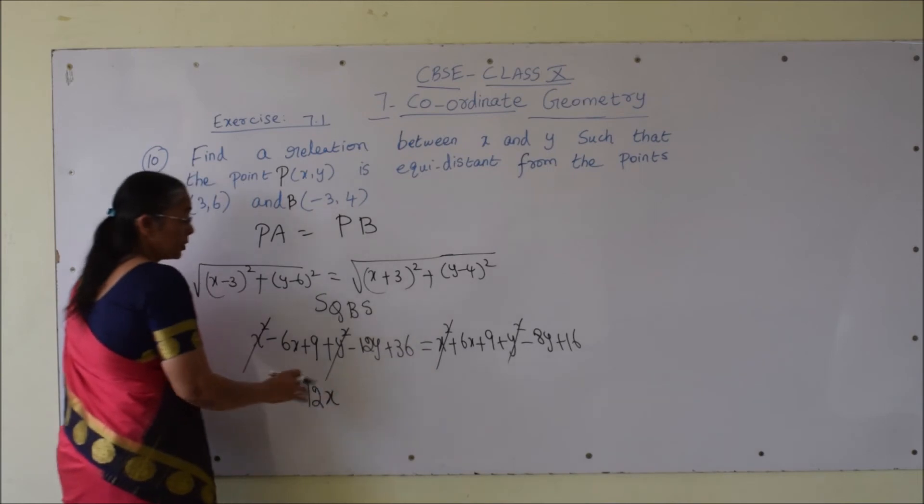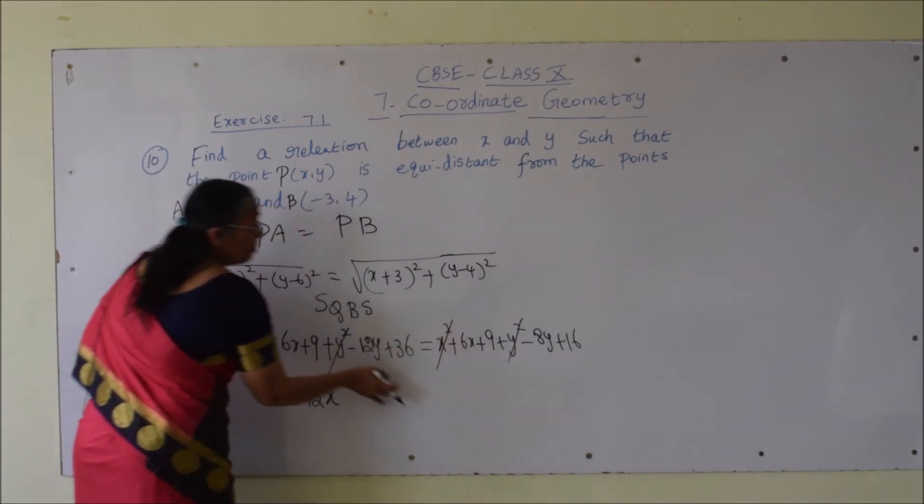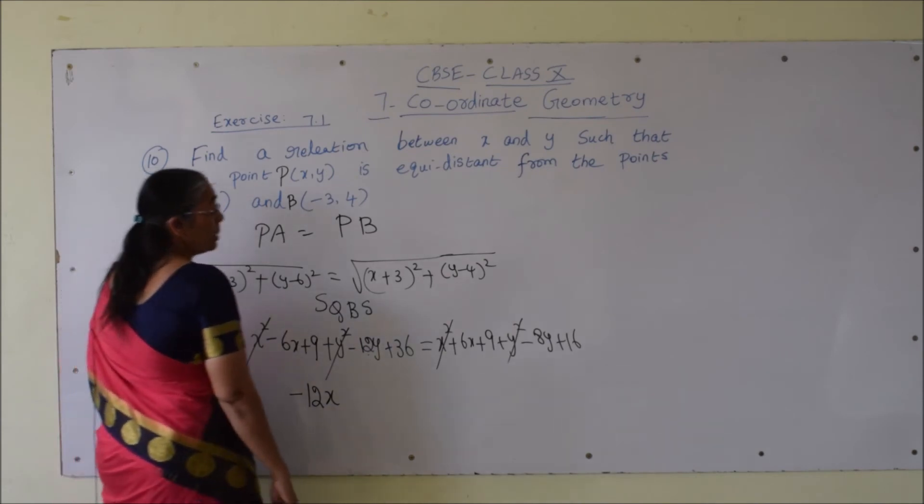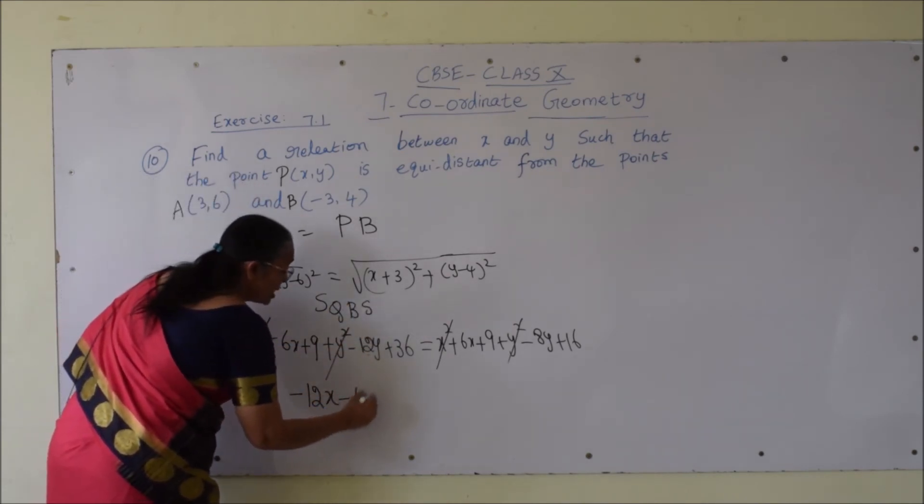Let me check the y term. Here minus 12y. I am bringing minus 8y here, it will become plus 8y. Minus 12y plus 8y is minus 4y.